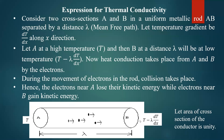Heat conduction takes place from the high temperature region to the low temperature region, so heat conduction takes place from end A to end B of the metal rod. During the movement of electrons in the rod, collisions take place. Because of that, electrons near end A lose their kinetic energy and end B gains kinetic energy — that is how heat transfer takes place. To simplify the derivation, we take the area of cross-section of the metal rod as unity.